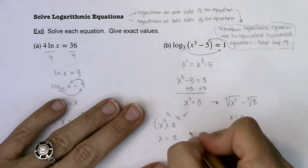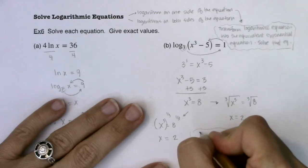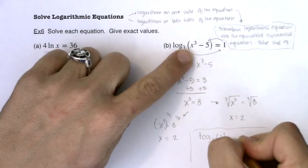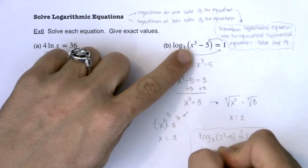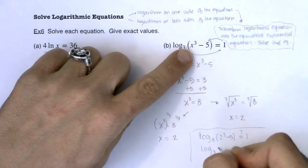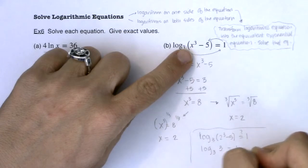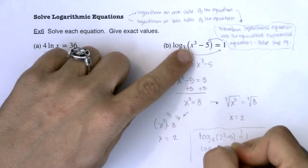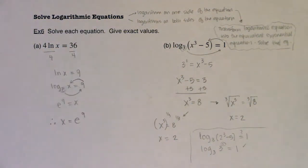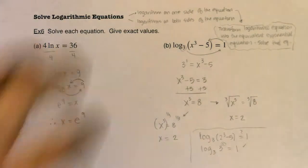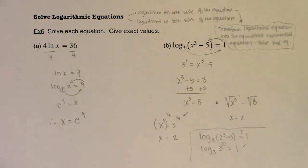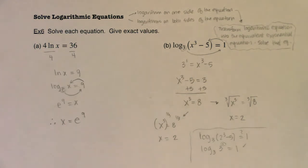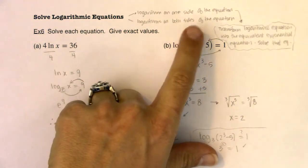Let's check: log base 3 of (2 cubed minus 5) — is that equal to 1? Well, 2 cubed is 8, and 8 minus 5 is 3. Is log base 3 of 3 equal to 1? It sure is, because when the base of your logarithm and the argument are the same, the only thing that survives is the exponent. So when you have a log on just one side, isolate the logarithmic term, transform it into the equivalent exponential equation, and solve. We'll flip to example 7 to cover what to do when there's a log on both sides.